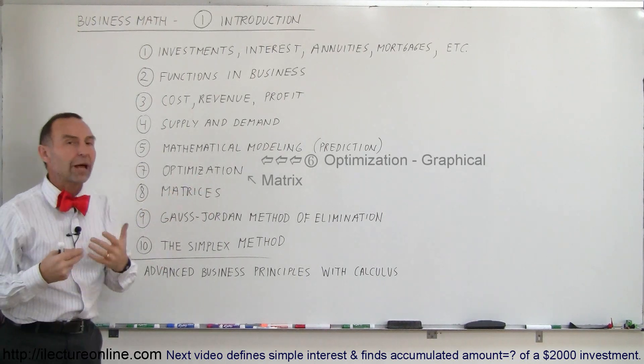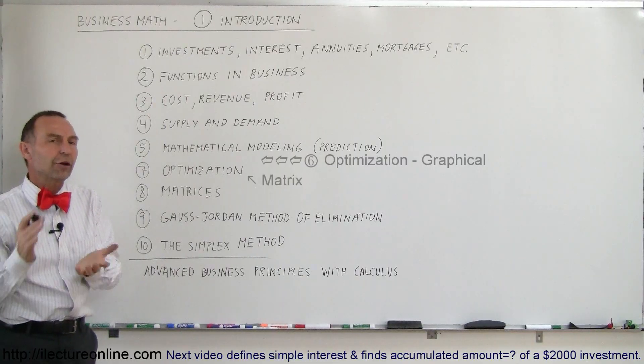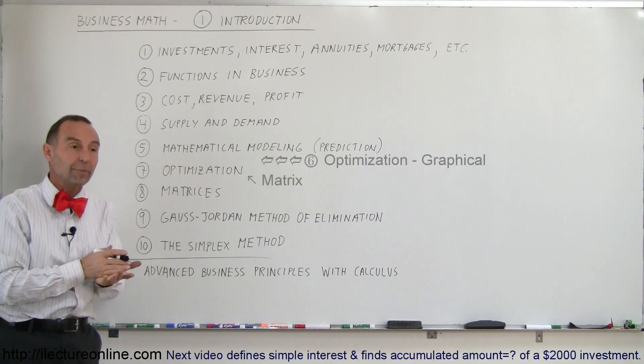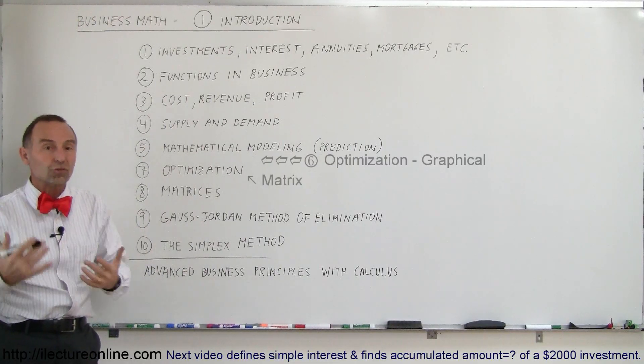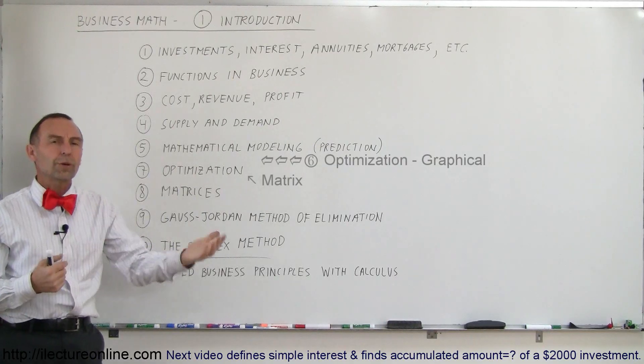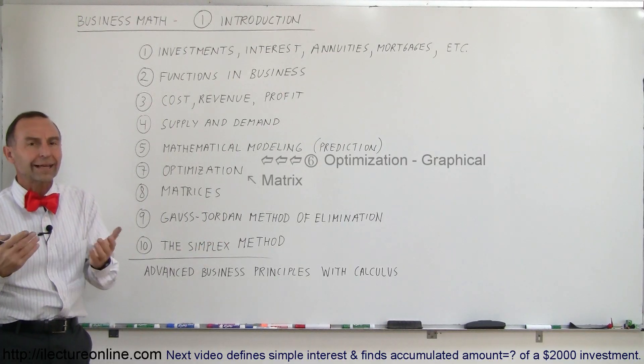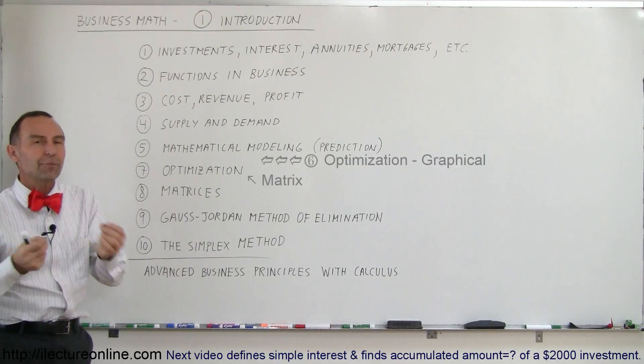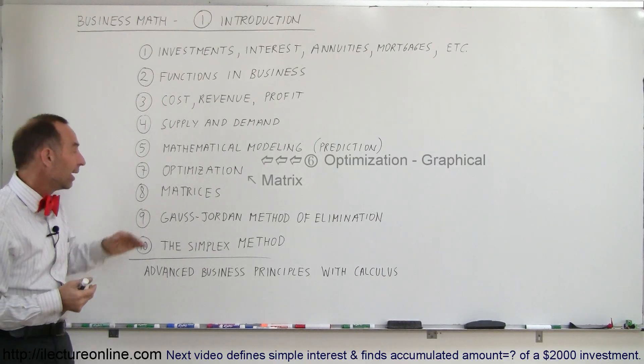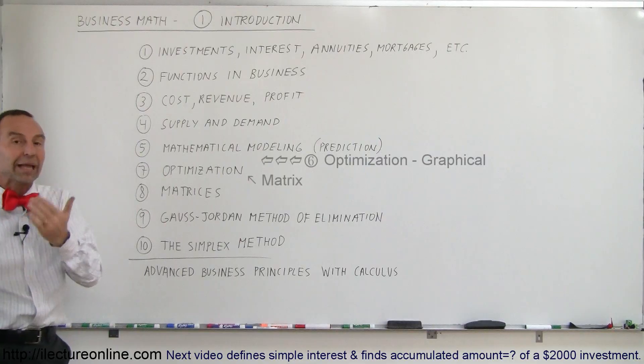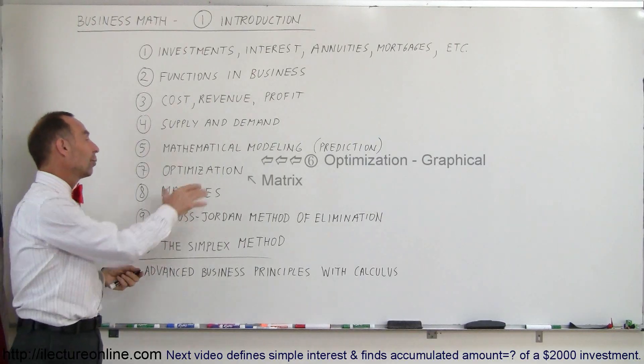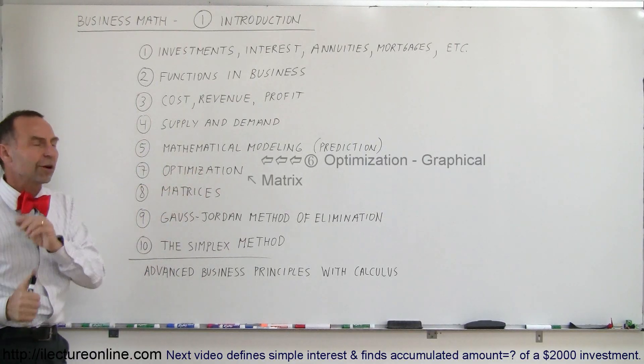We're going to learn optimization problems, which are very unique to business math, where we have all kinds of constraints. We want to produce things—where should we produce them? How much should we produce? These decisions are based on the cost and benefit of various aspects. Optimization is a very big part of business mathematics.